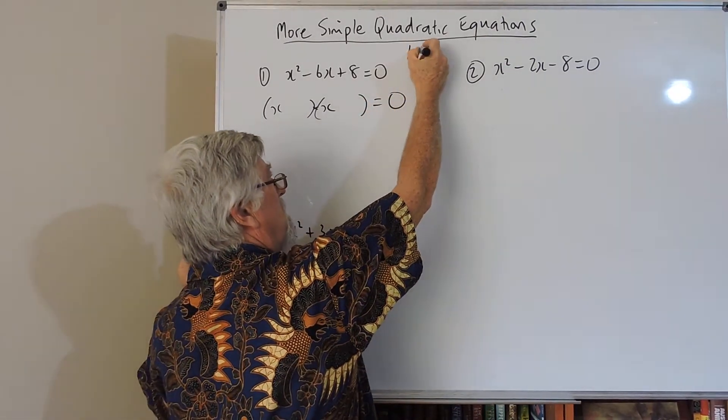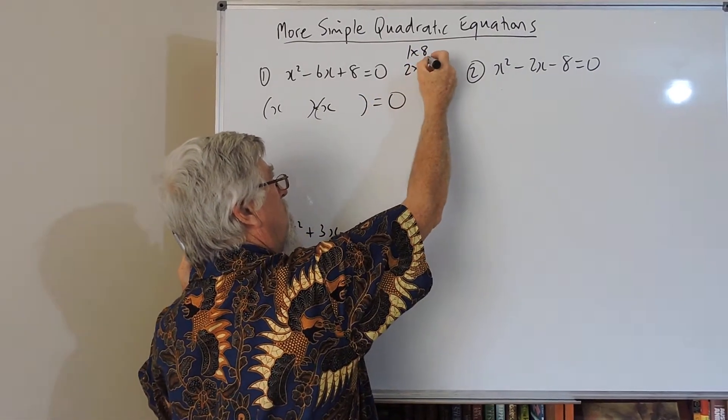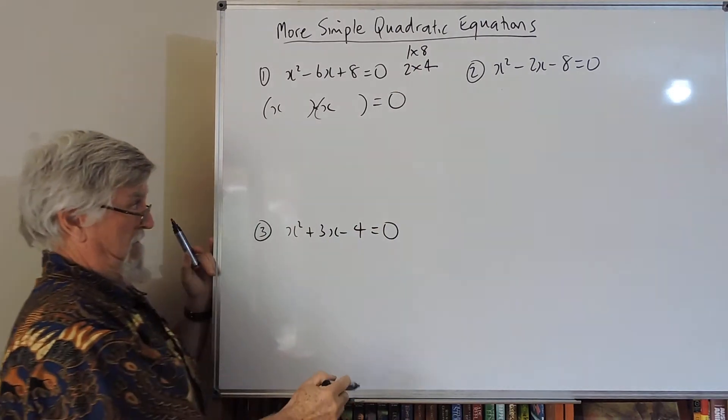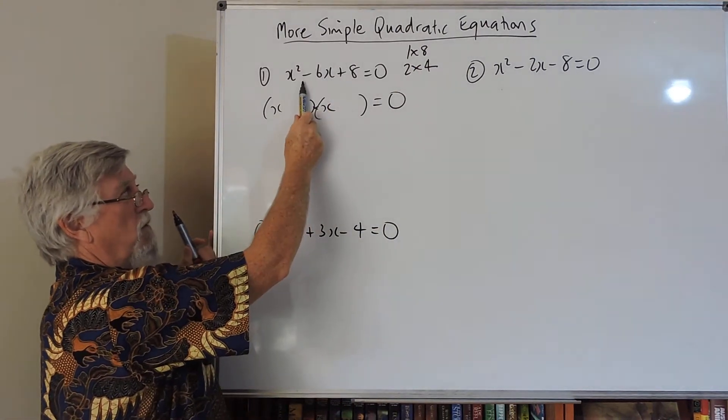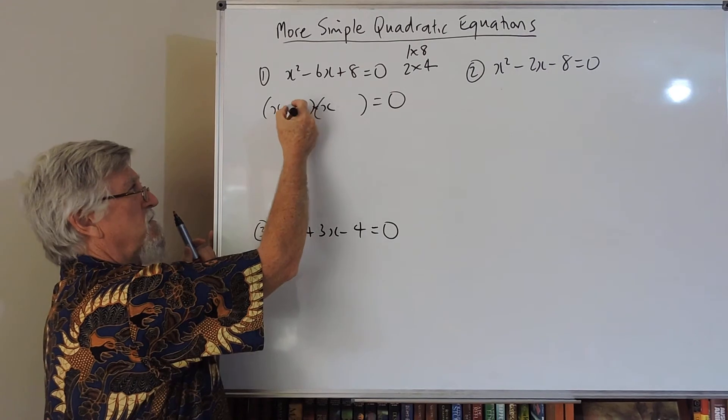So the possibilities are 1 and 8, and 2 and 4. Next question I ask is, what happens because of this minus?